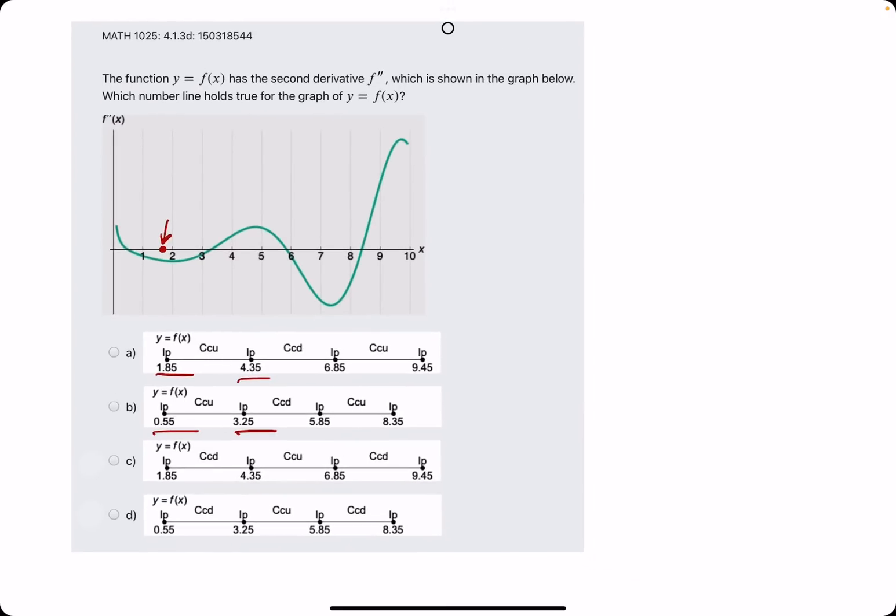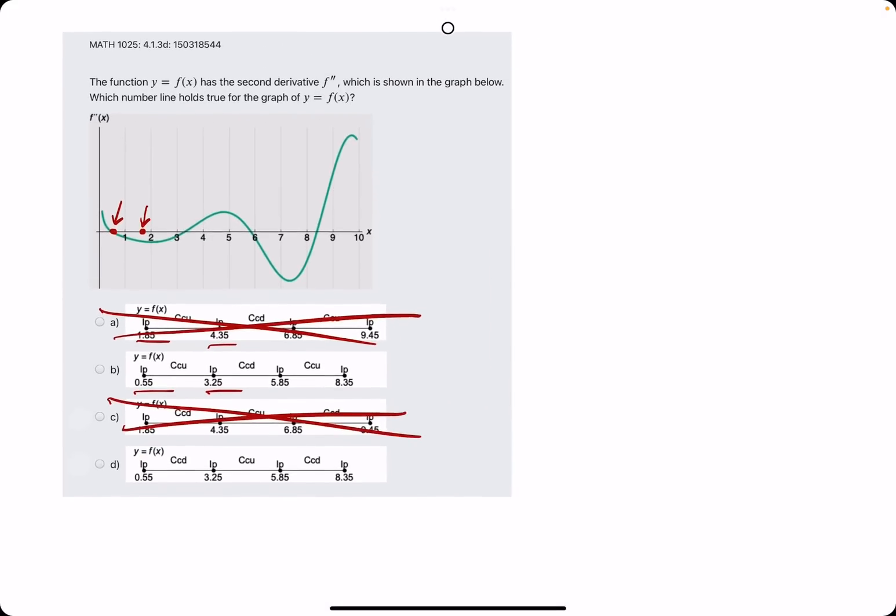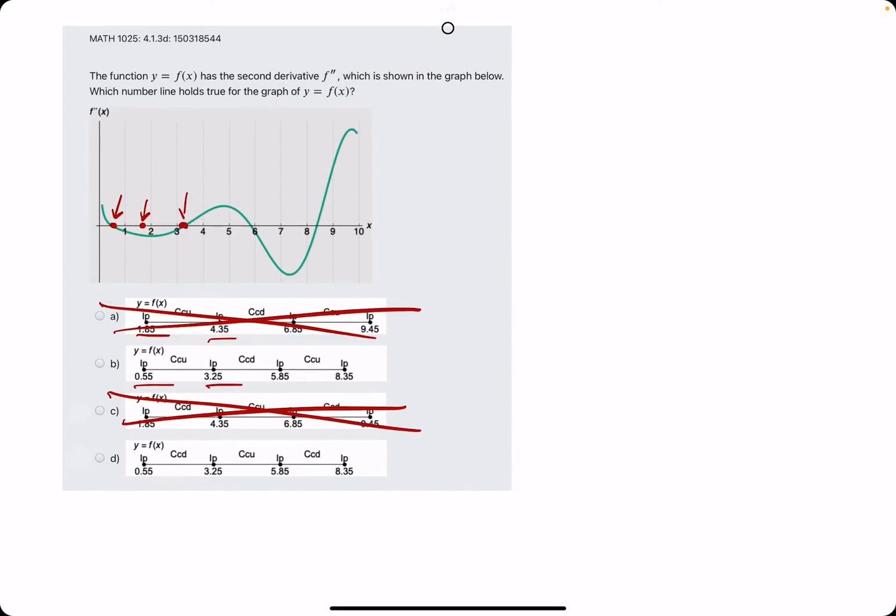1.85 is not an x-intercept of the curve, so this is out, and the other one with 1.85 is out. 0.55 makes sense because it's an x-intercept, so is 3.25.